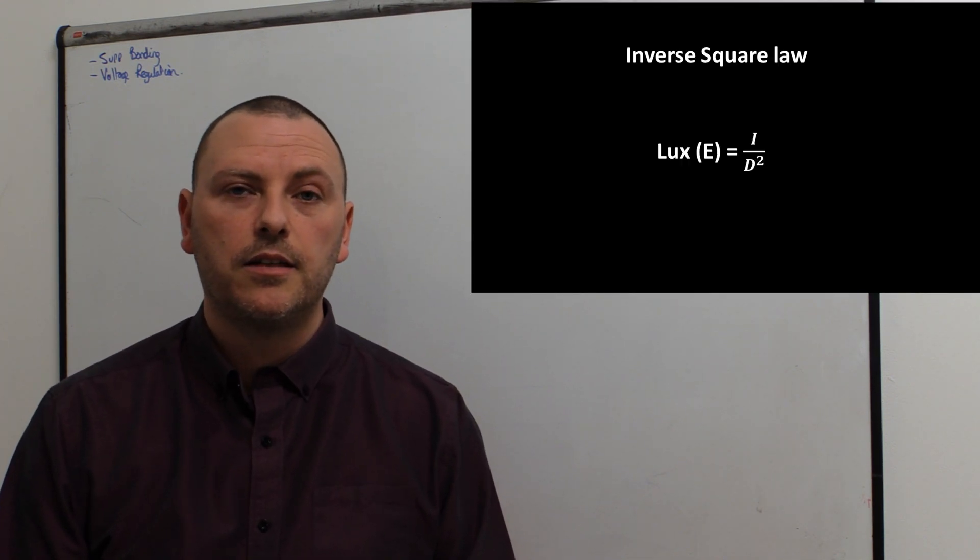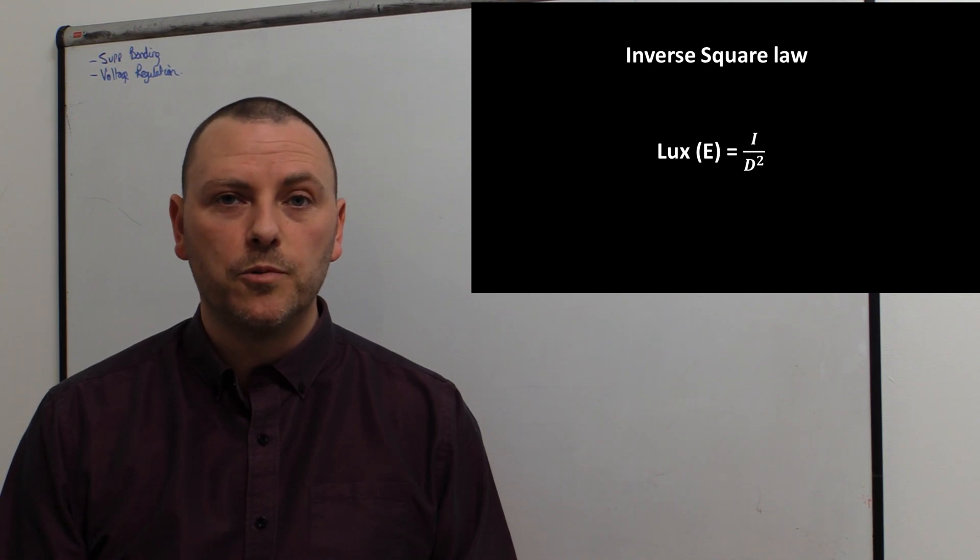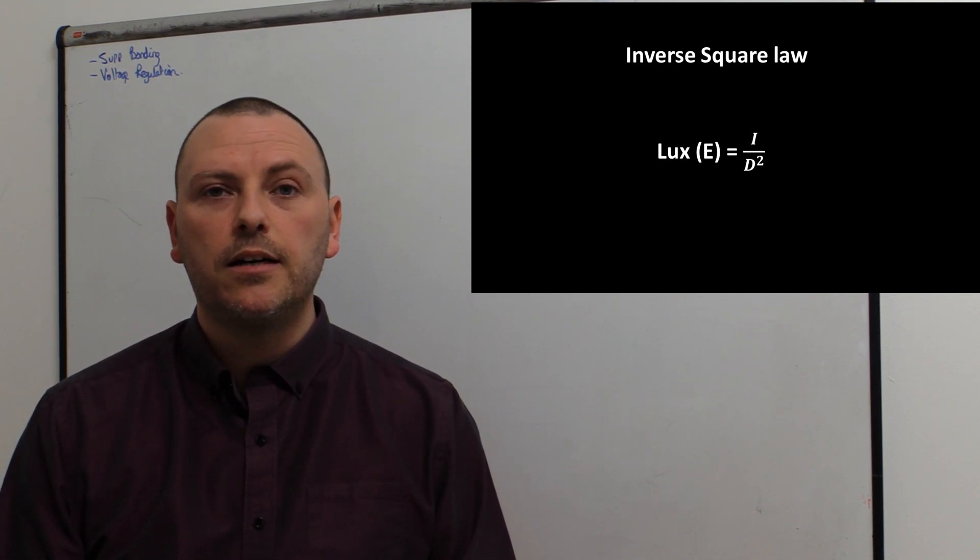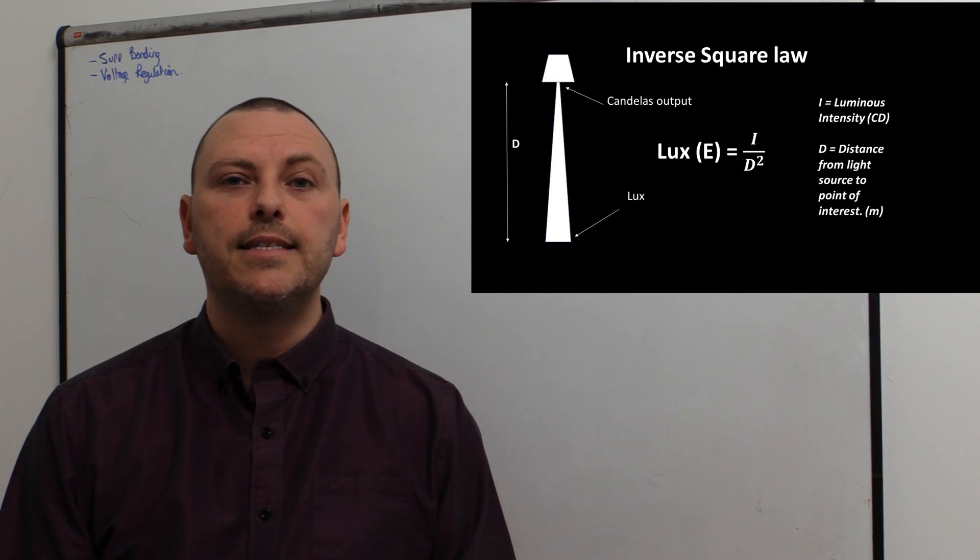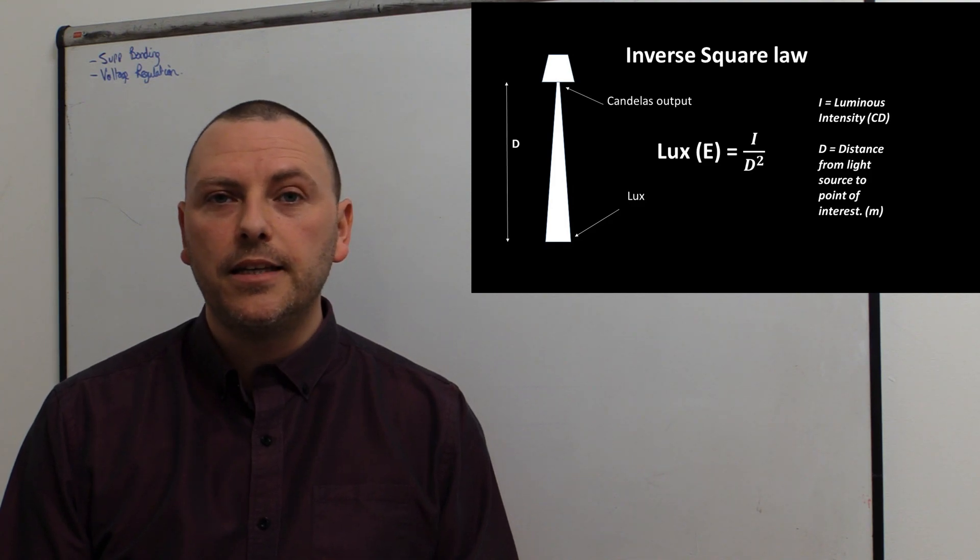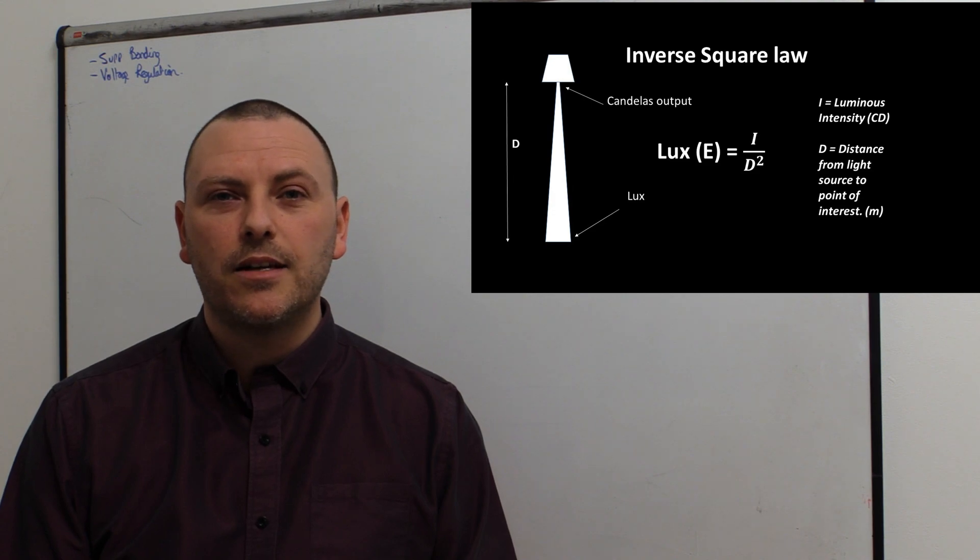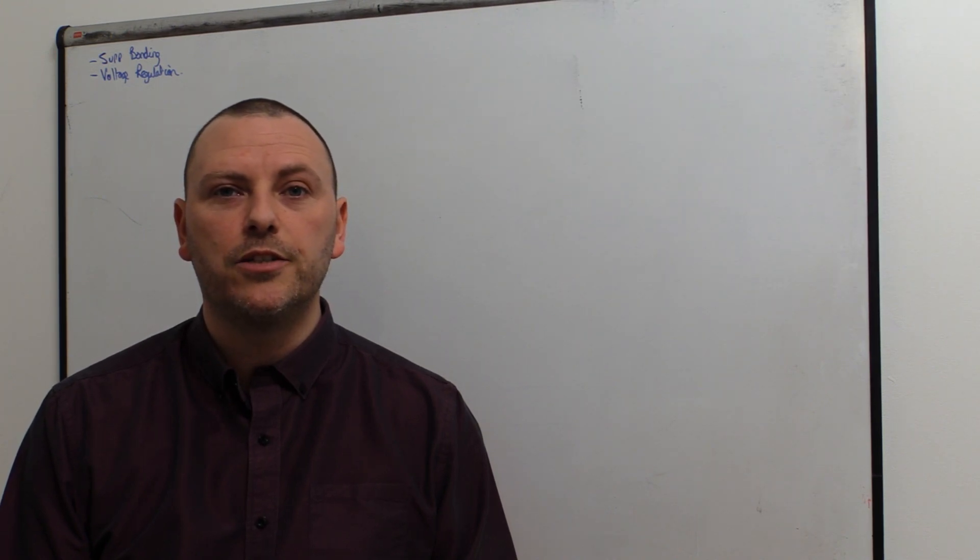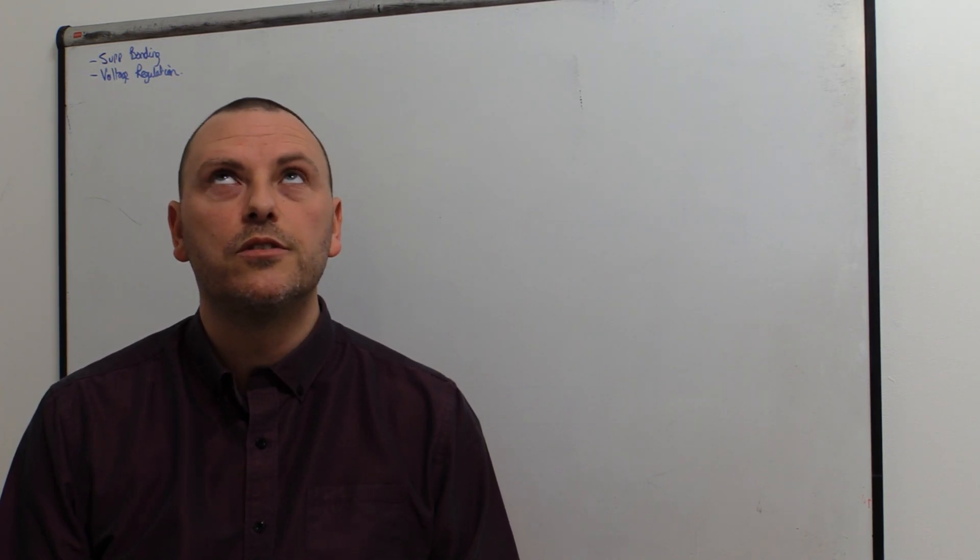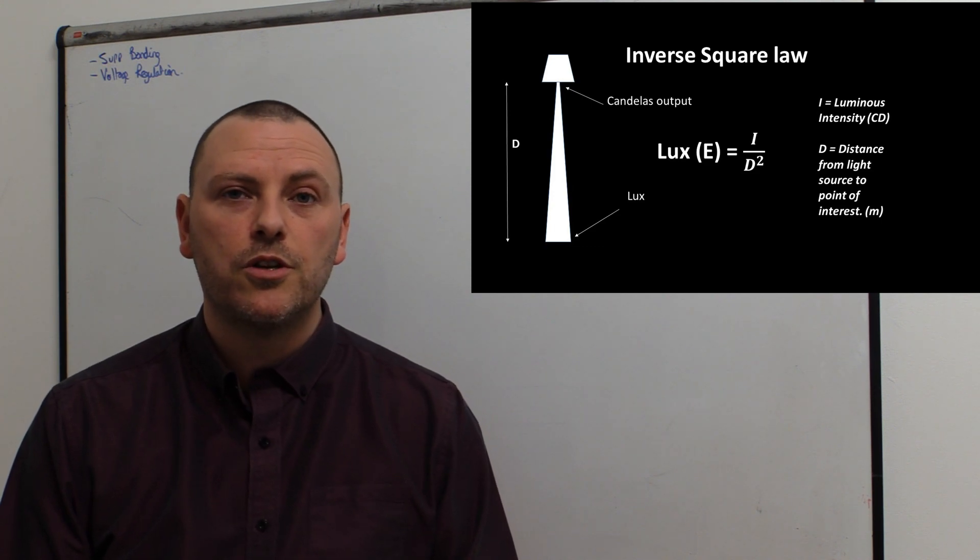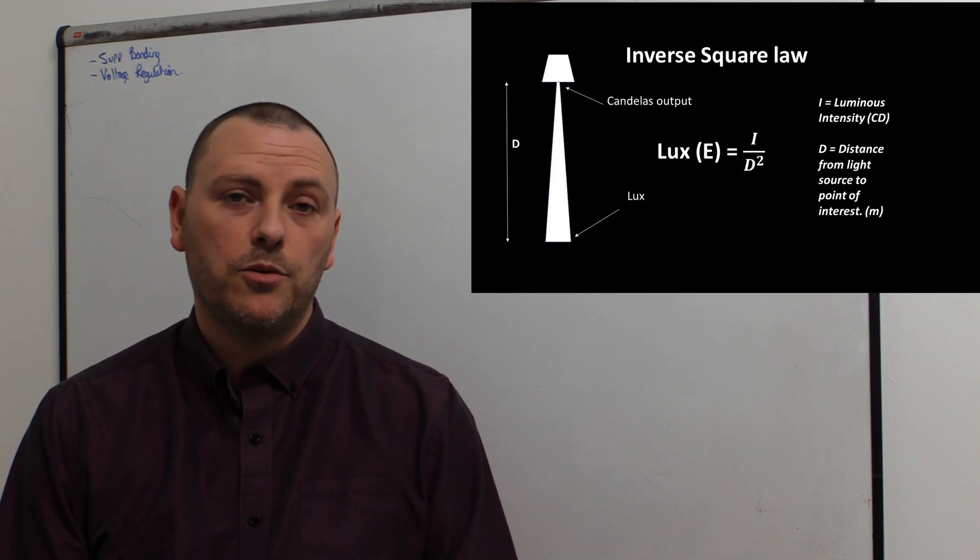So the equation looks like this and we've got three symbols: I, D, and E. The I stands for luminous intensity and this is measured in candelas. The E is measured in lux and that's the surface illumination. How illuminant does it appear? And then finally we've got the D and that's just the distance from the light source to the point of interest, so our surface.